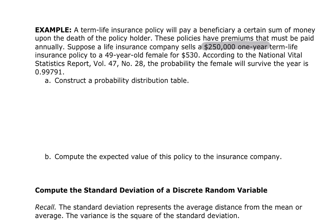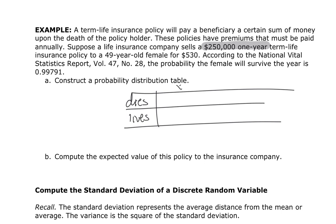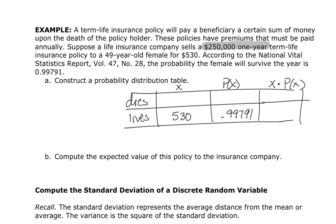You are now the insurance policy company. The two choices are: the person dies, or the person lives. This is X and P(x). If the person lives, the insurance policy makes $530, and the probability of that happening is 0.99791. The probability of that person dying is 1 minus 0.99791, which equals 0.00209 — less than 1% chance of dying.